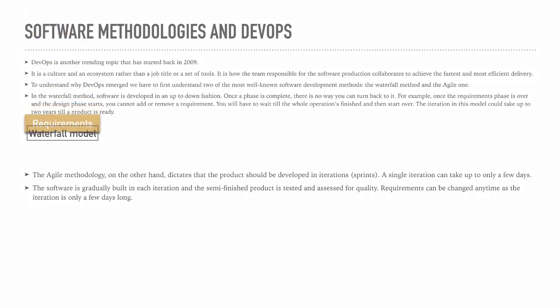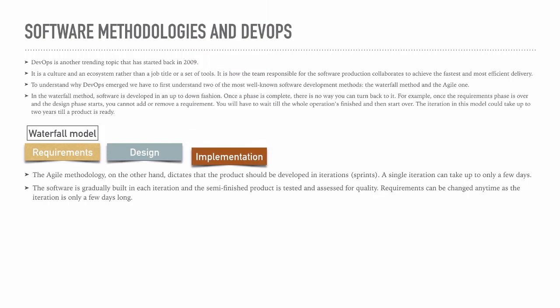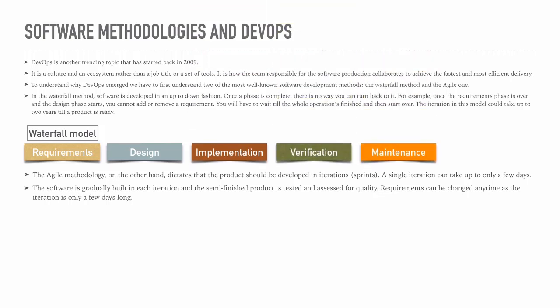In the waterfall model, we have the requirements phase, followed by the design phase, followed by the implementation phase, followed by the verification phase, then the maintenance phase. So if the client needs something new or something modified in the requirements of the application, it has to wait until the whole operation is over, until the software has been built, and then they can start a new iteration.